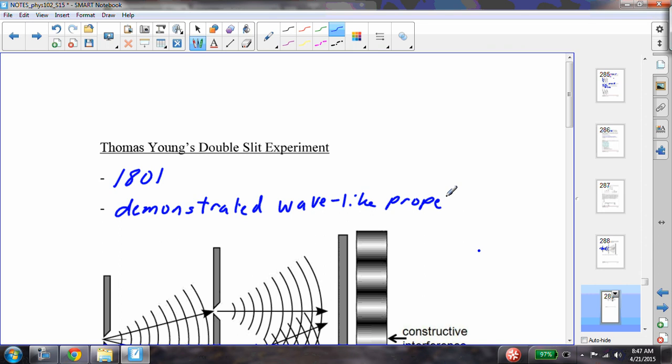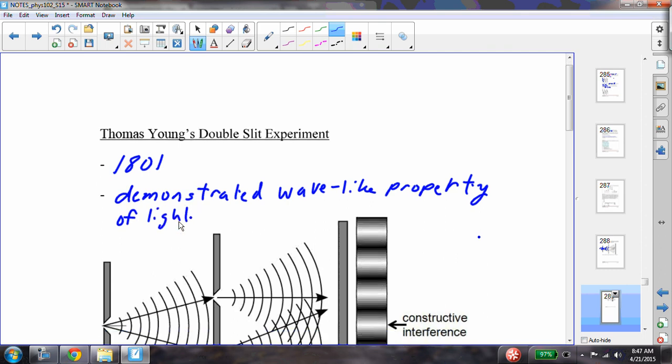We talked about this, how Newton thought it was a particle, Huygens thought it was a wave, Young thought it was a wave, and then Einstein later said that it was a particle, and his experiment basically looked like this.